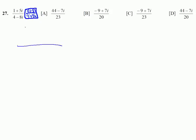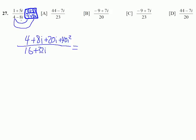On the numerator: 1 times 4 is 4, and 1 times 8i is plus 8i. The middle two terms: 5i times 4 is plus 20i. On the end: 5i times 8i is plus 40i squared. Down below: 4 times 4 is 16, the outer terms give plus 32i, the inner terms give negative 8i times 4 which is minus 32i — those cancel each other out. The last two terms: negative 8i times positive 8i is negative 64i squared.